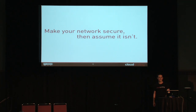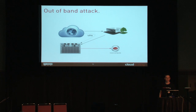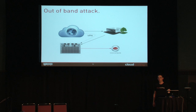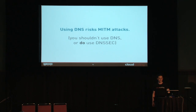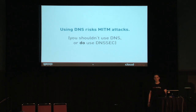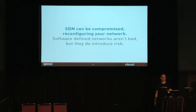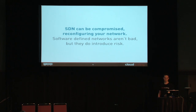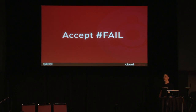Make your network secure and assume it isn't. You have out-of-band attacks, people coming in over your VPN where it's not terminated at the right place, or maybe there's no firewall or they get through it. Using DNS is a risk of man-in-the-middle attacks and all sorts of nasty things. Don't use DNS or use DNSSEC — it's not that hard to not use DNS, though DNSSEC is kind of hard. SDN can be compromised and somebody can reconfigure your network. The whole point is that we want to accept our failure to do all of these things.